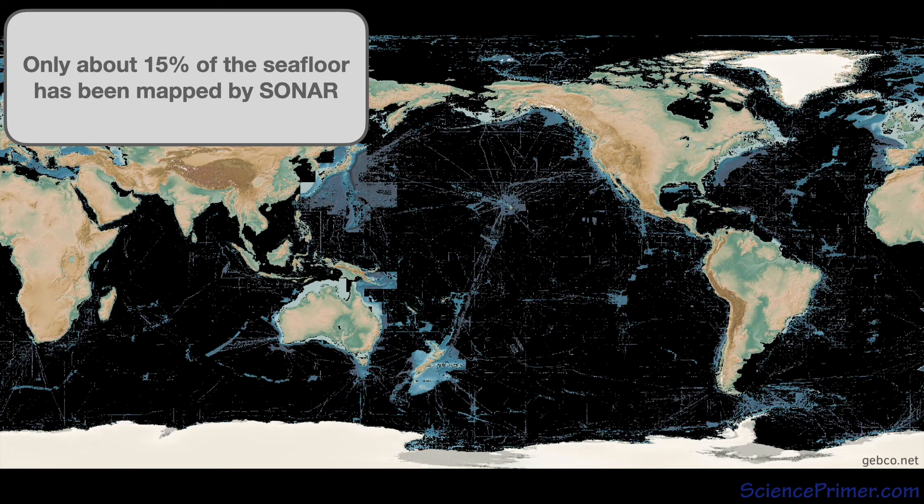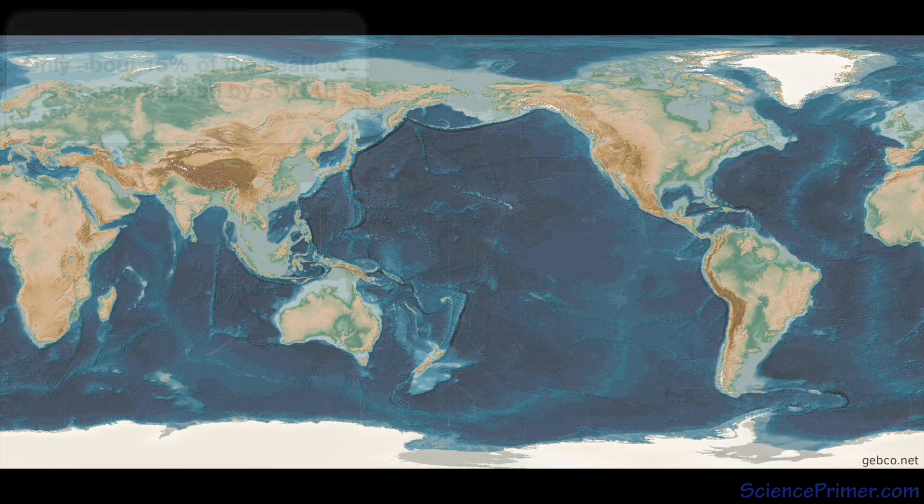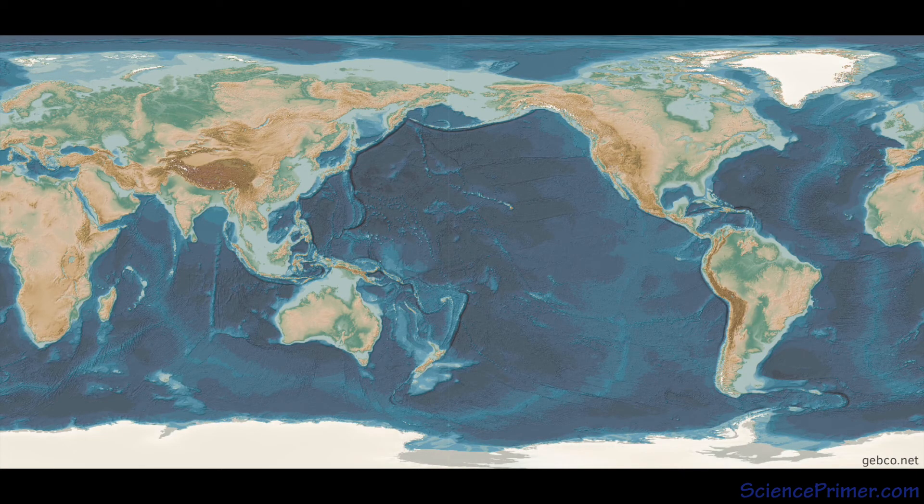With only 15% of the seafloor mapped by sonar, the ocean bathymetry shown on sites like Google Earth are based on satellite data. To the unaided eye, the ocean surface may look flat, but it is not. Beginning in the 1970s, scientists began using satellite-mounted altimeters to map variations in ocean elevation by bouncing microwaves off the surface. By collecting multiple samples over long periods, noise from waves, currents, and tidal activity can be subtracted away to reveal the mean sea surface over large regions.